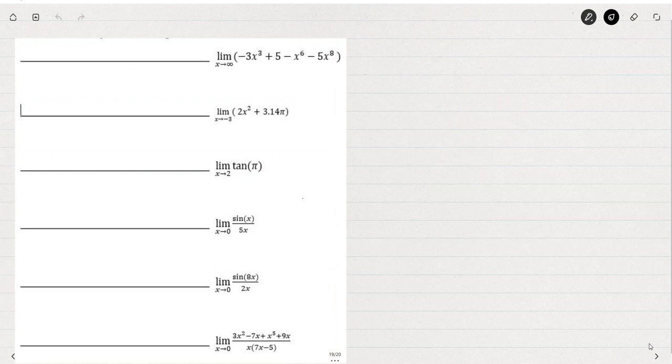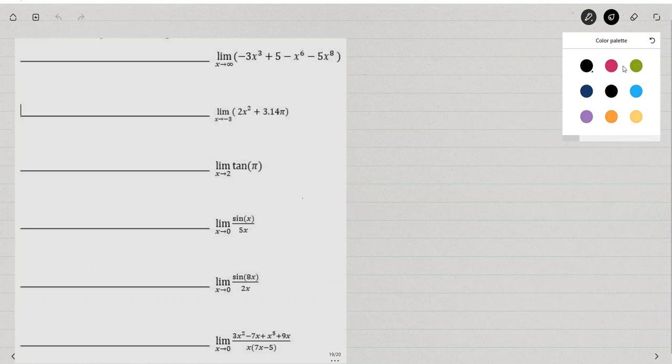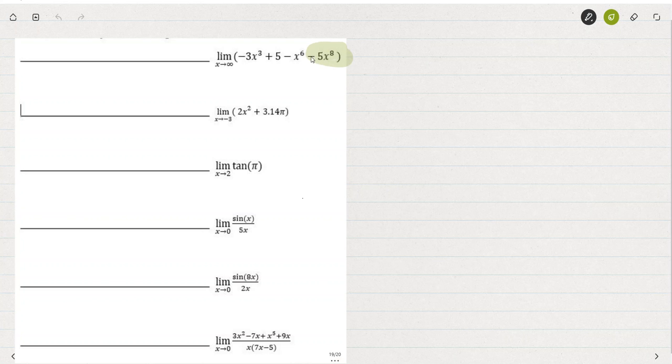To start with, this limit as x approaches infinity of -3x³ + 5 - 6x⁶ - 5x⁸. That's not written very nicely, is it? Really proper format would put this in descending order so that we would see that the lead term is -5x⁸.